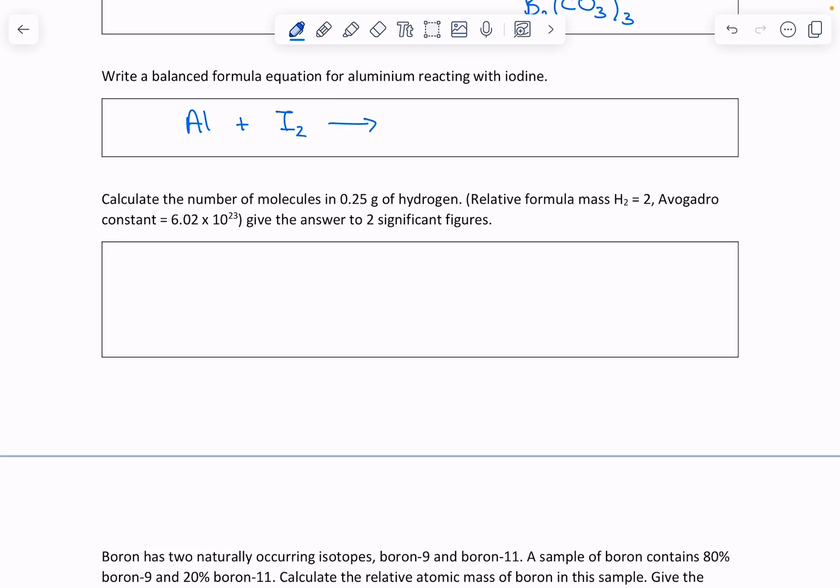We need to look at the formula for that. So over here, let me put aluminium, and it's a 3+ sign. It's in group 3, and iodine is in group 7, so it's a -1 ion. This has got three bonds, and this wants to make one bond.